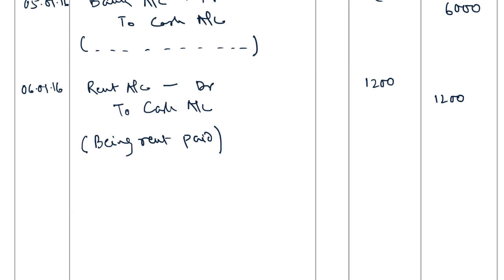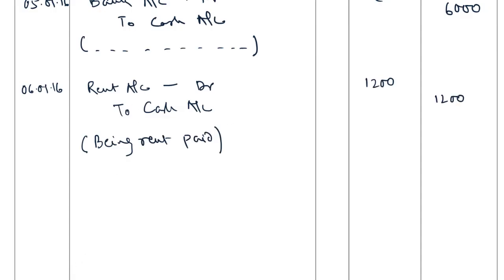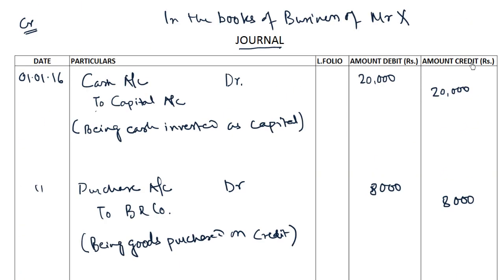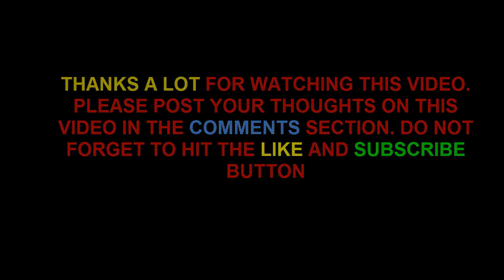This was a small example to demonstrate how to decode events or transactions of a business into the debit and credit aspects and how to post them in the journal. We have posted all these entries into the journal one by one. If you found this useful, please give it a thumbs up and subscribe to the channel for similar videos in the future. Thanks for watching.